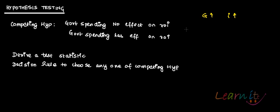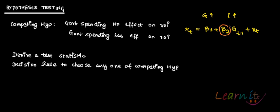Your model is: the rate of interest rt equals beta 1 plus beta 2 times Gt-1 plus ut. This means whatever the level of government spending in the last period will affect the rate of interest in this period. You are interested in the sign of the coefficient beta 2.